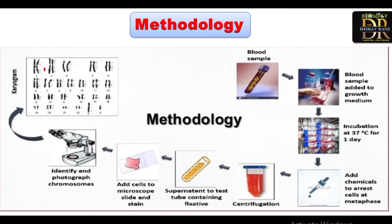In the karyotype, you count the chromosomes carefully. A normal individual has 46 chromosomes; abnormalities may show 45 or 47. You can also determine the gender of the individual — whether it is a boy or a girl.